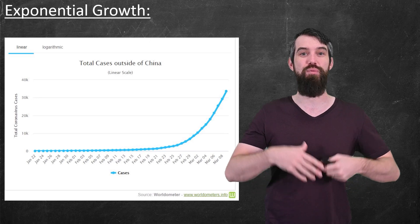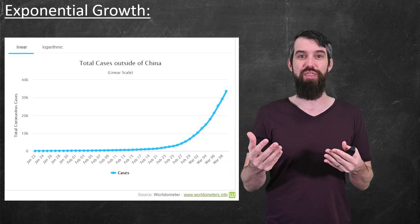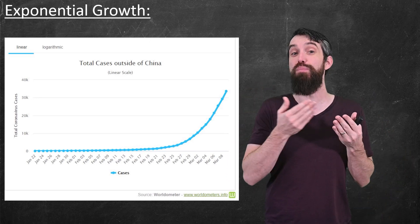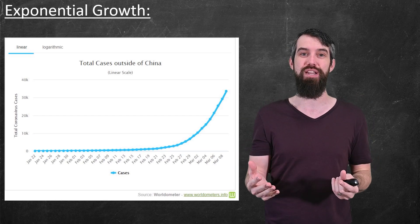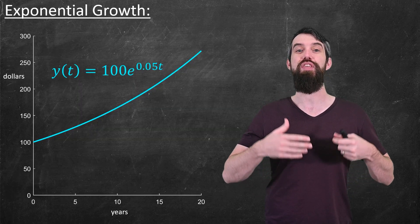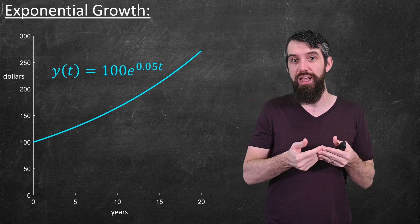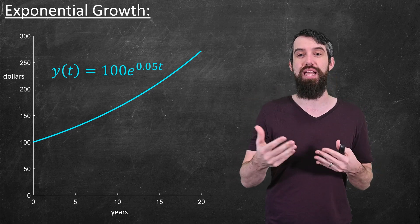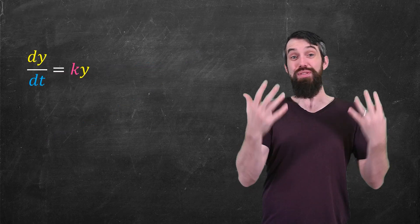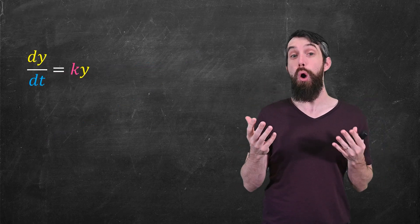For example, in a pandemic when we're in the early days and the growth rate is just proportional to the number of people who are infected. Or in a bank account where the growth rate, if it's compounding continuously, is proportional to the amount that you have, perhaps 5% interest as time goes on. And so this differential equation comes up in all sorts of places.